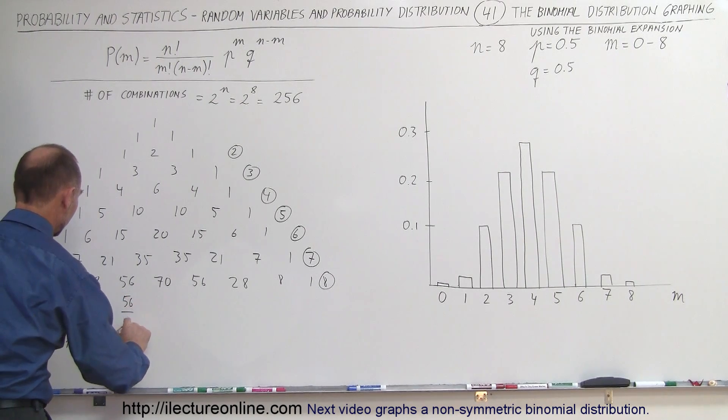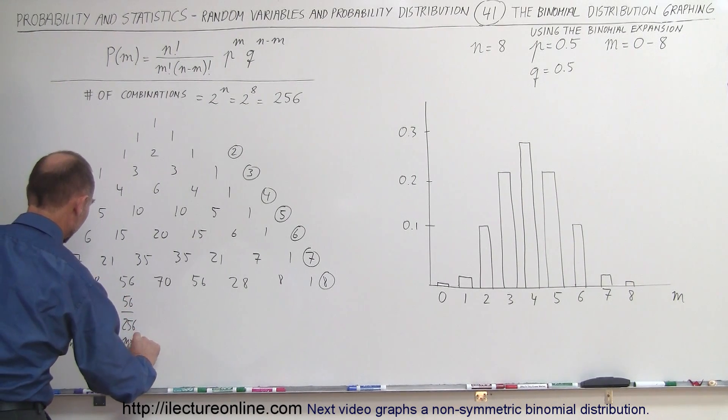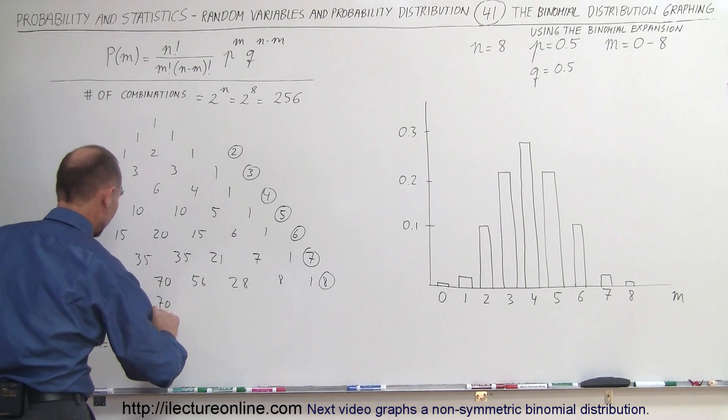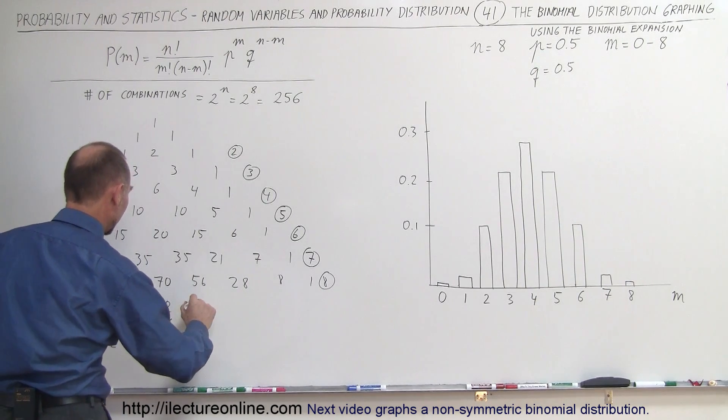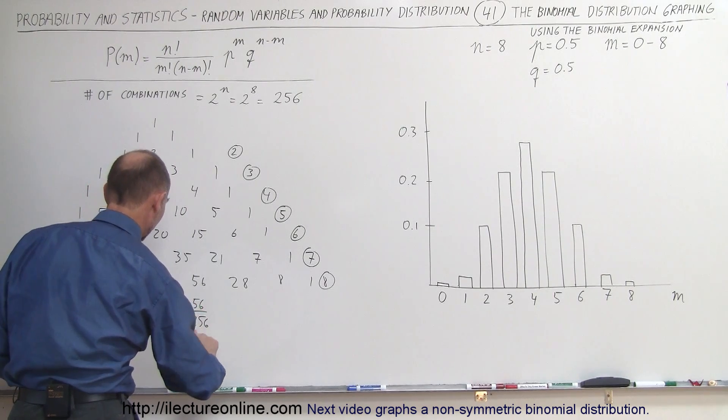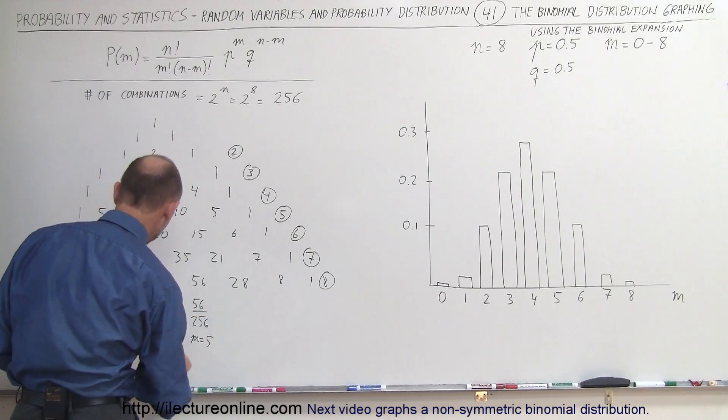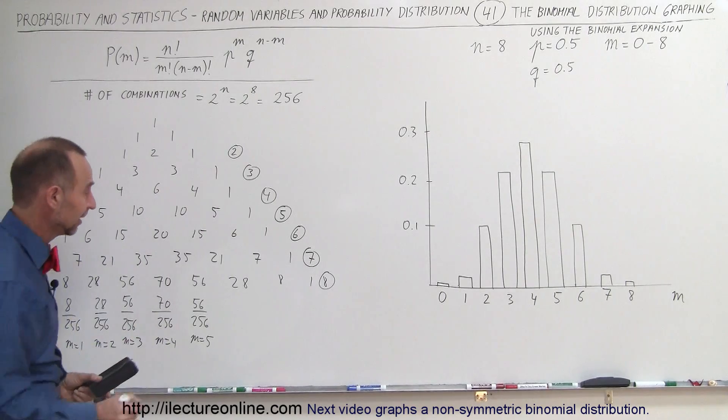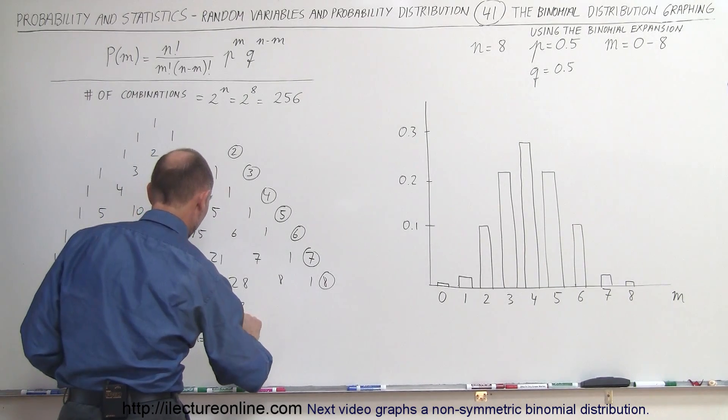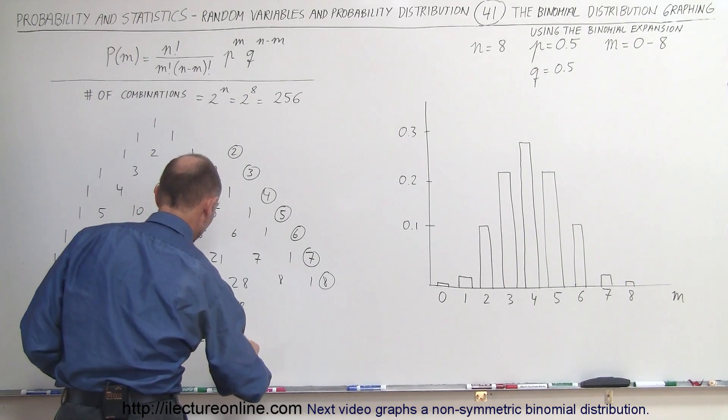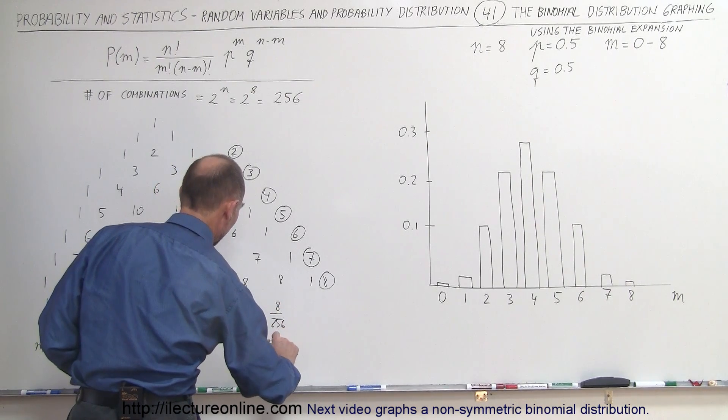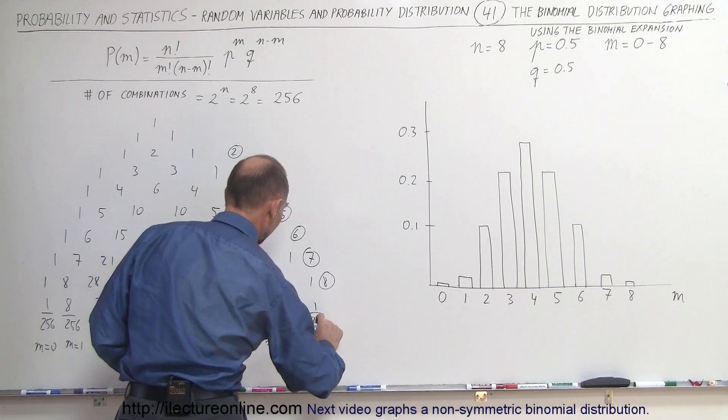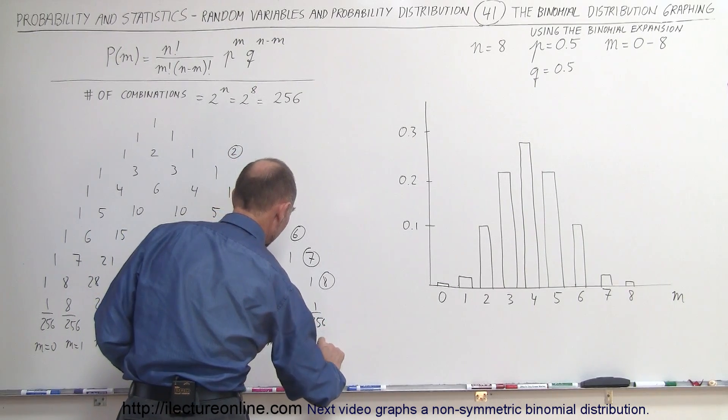56 out of 256 is for m equals 3. 70 out of 256 is for m equals 4. Then we have 56 out of 256 is for m equals 5. And again, m is the number of successes. So here we have 28 out of 256 is for m equals 6. 8 out of 256 for m equals 7. And 1 out of 256 is for m equals 8.